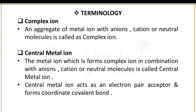Next is central metal atom. The metal atom which forms a complex ion in combination with anions, cations, or neutral molecules is known as the central metal atom. The central metal ion acts as an electron pair acceptor and forms a coordinate covalent bond. Ligands are those compounds which can donate an electron pair, while the central metal ion acts as an electron pair acceptor.